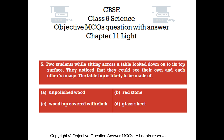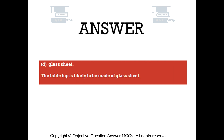Question number 5. Two students while sitting across a table looked down onto its top surface. They noticed that they could see their own and each other's image. The table top is likely to be made of — Option A: unpolished wood. Option B: red stone. Option C: wood top covered with cloth. Option D: glass sheet. The right answer is option D — glass sheet. The table top is likely to be made of glass sheet.